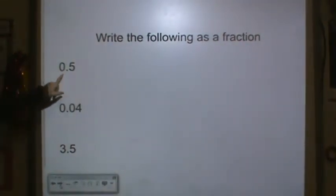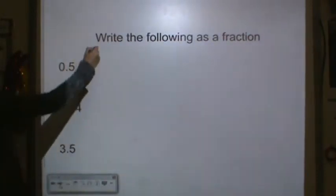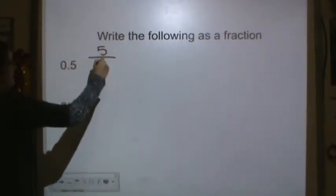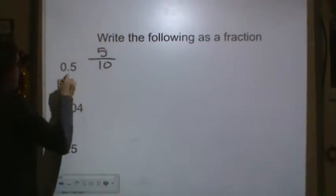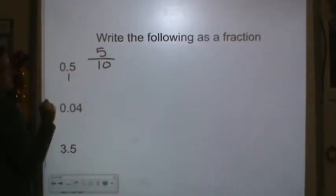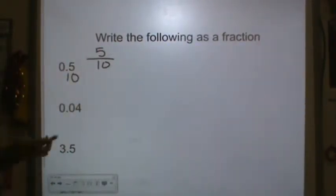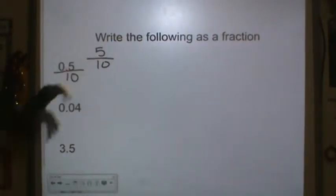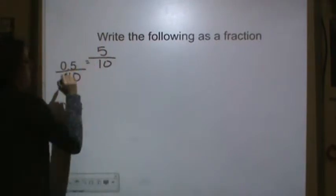So first, if you read it, you say 5 tenths. So it's pretty easy. It's just 5 tenths. And remember my trick? You put a 1 under the decimal place and a 0 under how many ever numbers are under there. Draw a line. You now have 5 tenths. So 0.5 is equal to 5 tenths.